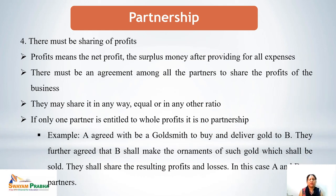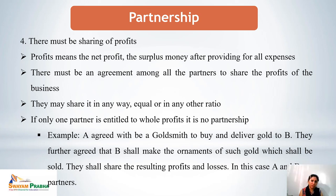The fourth essential feature is there must be sharing of profit. When more than one person joins to do business, the objective is sharing of profits. Profit here means the net profit — the surplus after paying all expenses. There must be a specified agreement to share profits in a specified ratio, or in absence of any contract, they share equally. If any partner is entitled to the whole of the profits, this is not a valid contract of partnership.